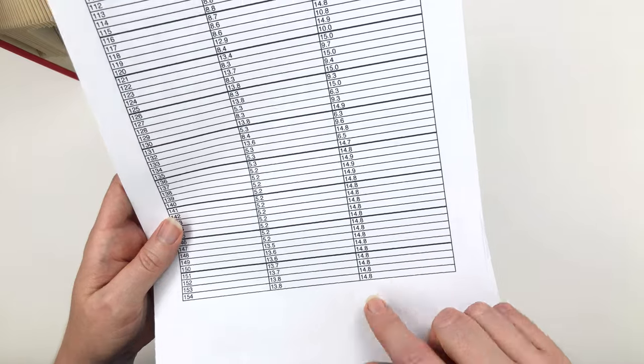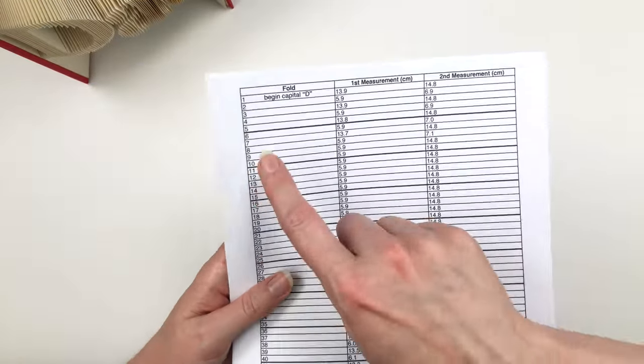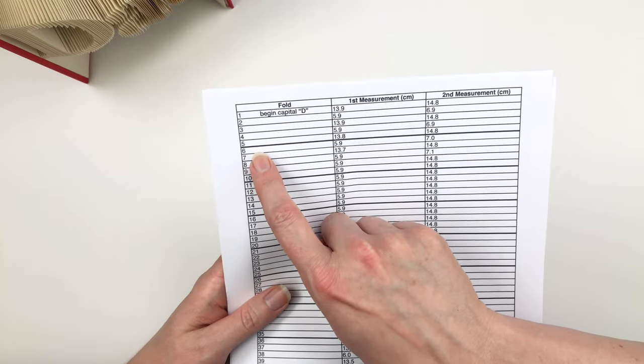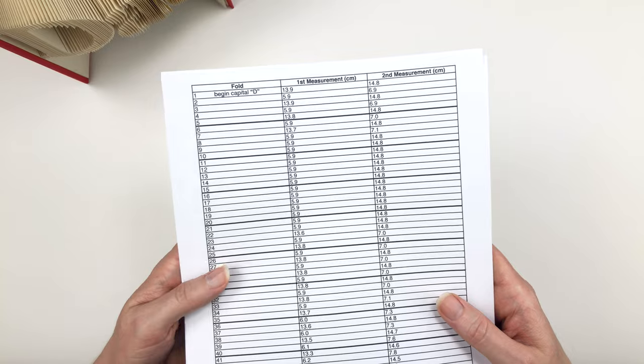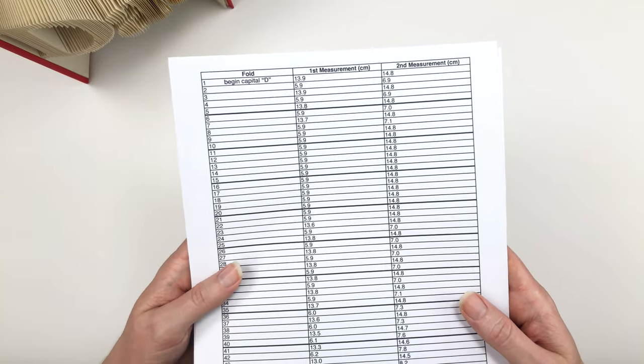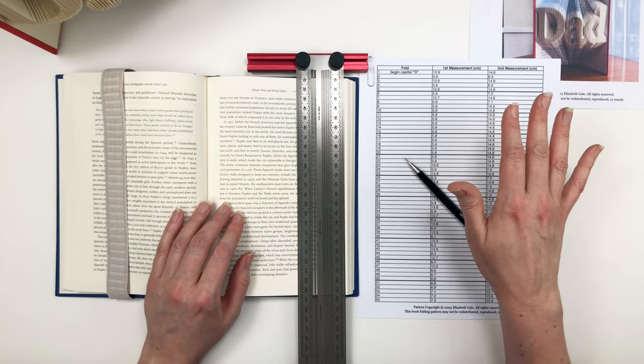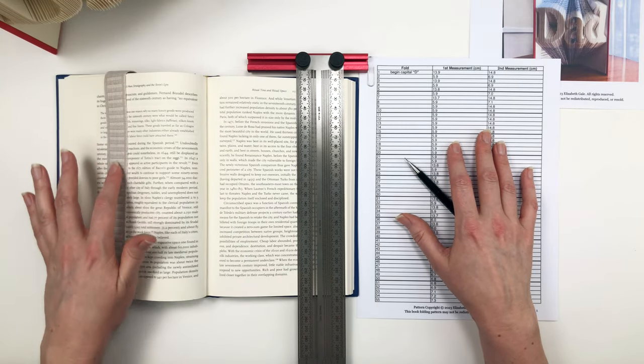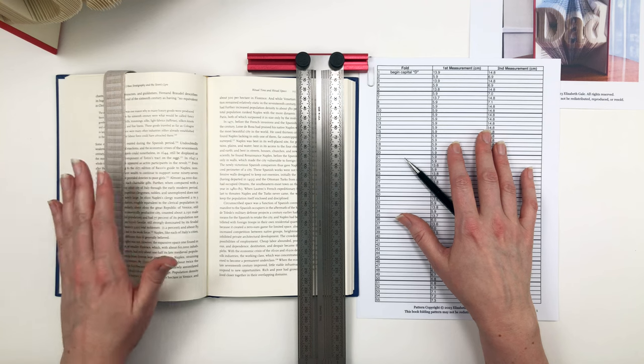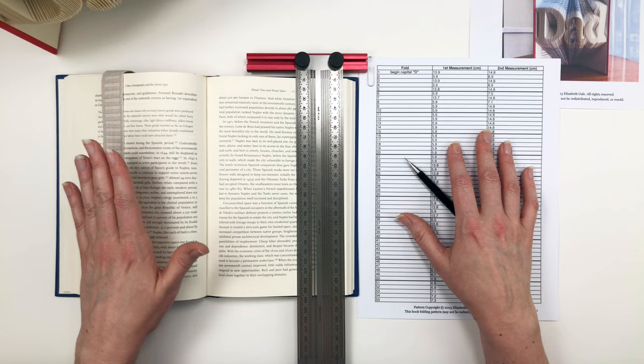Let's go back to the first page and let's do these first five folds together. We'll measure, mark and fold them and that will get you off to a good start. So you'll be able to see how the capital D begins. I've got my book here ready to go along with the pattern. And I like to wrap a piece of elastic around the pages that I'm not folding. It acts as a third hand to hold them down and just keeps them out of the way.